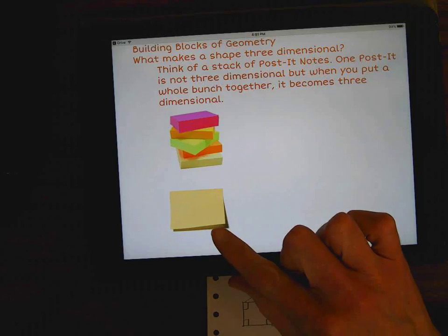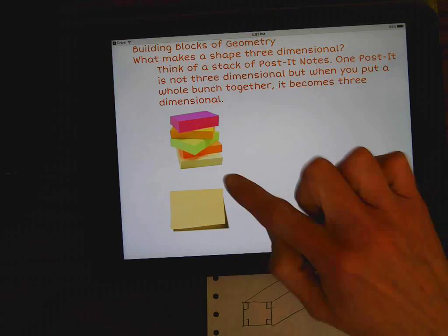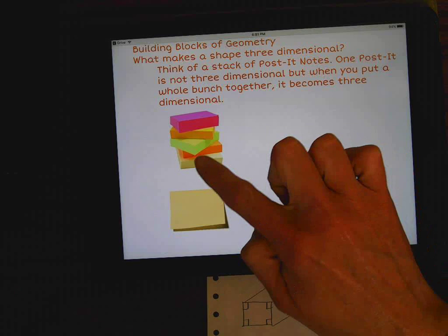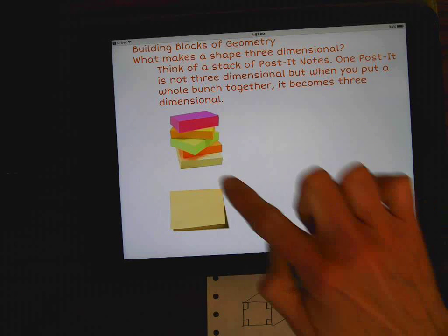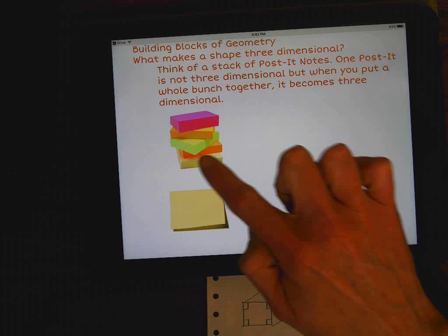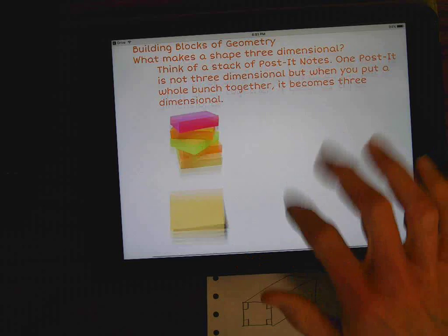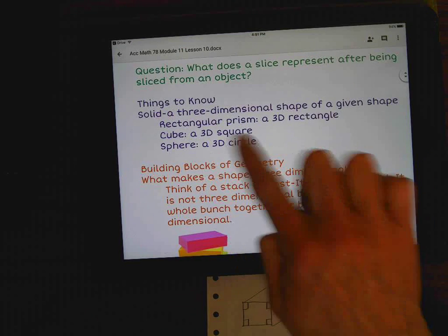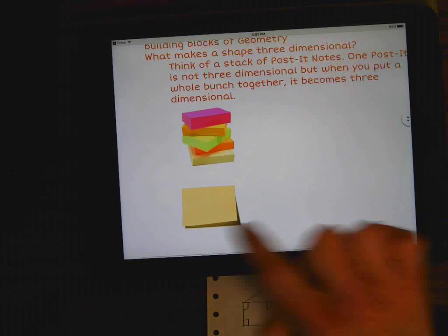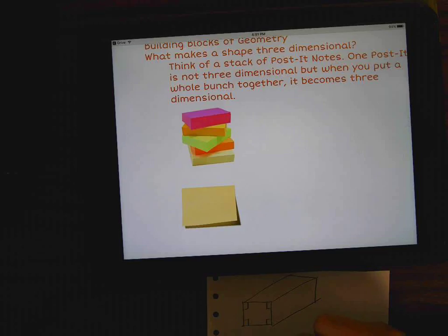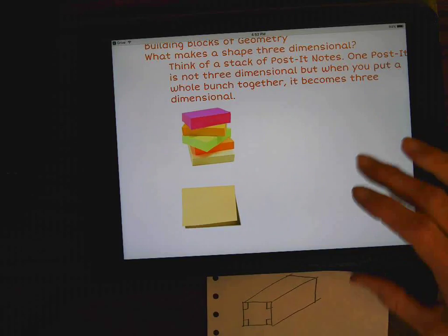So take a look at it. This right here is a post-it all by itself. It's flat. It's 2D. It has no depth. But as soon as you start stacking the post-its on top of each other, what does that one single post-it turn into? It turns into a three-dimensional figure. So this one right here, for example, would be a rectangular prism because the post-it is in the shape of a rectangle, and then when you stack them on top of each other to get depth, they turn into that shape.